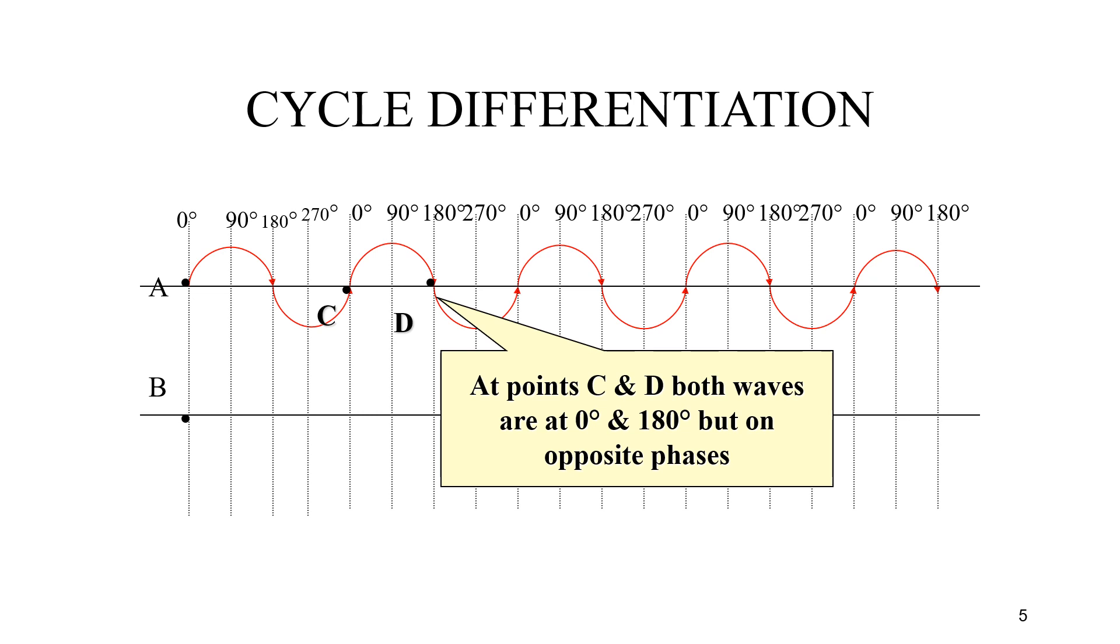Charts for general navigation have representative hyperbolic lines corresponding to various time delays from these pair of stations, in addition to the ordinary latitude and longitude lines and other navigational data.